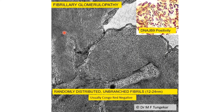Fibrillary glomerulopathy or fibrillary glomerulonephritis is a fairly uncommon condition resulting in deposition of fibrils similar to amyloid, but they are thicker — about 12 to 24 nanometers in size. Electron microscopy triggers the diagnostic process, and a more recently available immunoperoxidase stain for heat shock protein called DNAJB9 clinches the diagnosis. The condition is diagnosed based on presence of fibrils as well as positivity for this stain.